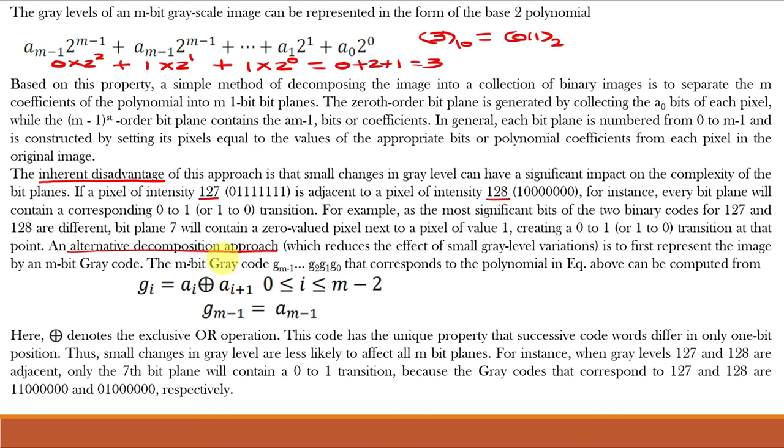The solution is to use gray code rather than BCD codes which reduces the effect of small gray level variations. So mathematically, the gray codes can be mentioned using this equation where this symbol denotes the exclusive or operation. So we know that for these gray codes, the adjacent numbers differs only in one bit. So in bit planes, we will obtain a continuous pattern that can be used for compression using compression technique like run length coding.